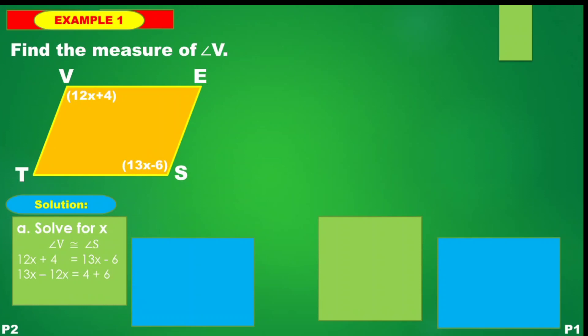So 13x − 12x gives x = 10, since 4 + 6 = 10. The value of x is equal to 10. We may now use that value to find the measure of angle V.